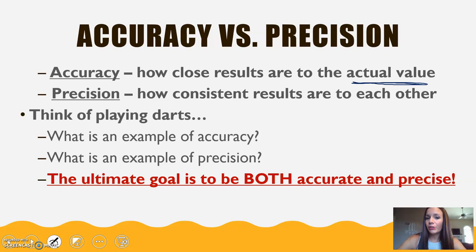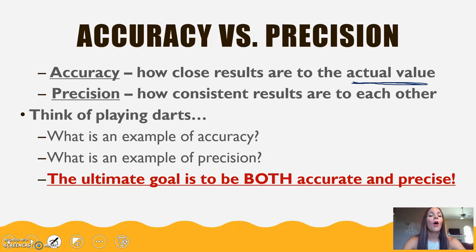Think about playing darts. The goal is to hit the bullseye right in the middle. An example of accuracy in darts would be to throw a dart and hit the bullseye. An example of precision may be throwing three darts that land way off in the upper right-hand corner but all land by each other. The ultimate goal is to throw multiple darts and hit the bullseye — just like in science, our goal is to be both accurate and precise.